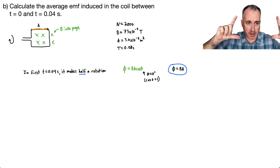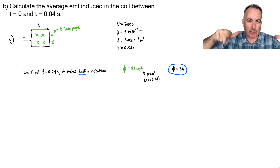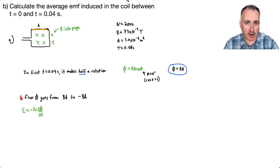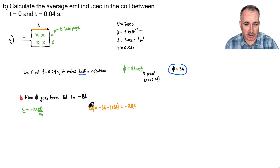It's going to go from a flux of B·A, and when it spins halfway around, it's upside down — so the flux linkage becomes negative B·A. It goes from B·A to negative B·A. So delta phi equals negative B·A minus positive B·A, which gives negative 2·B·A. So my change in flux is negative 2·B·A.